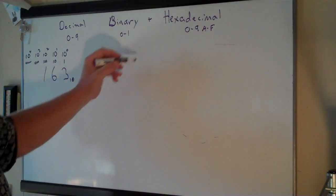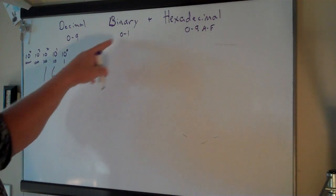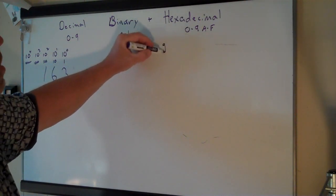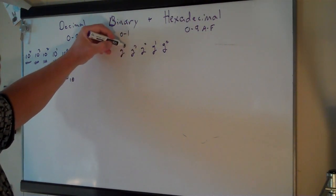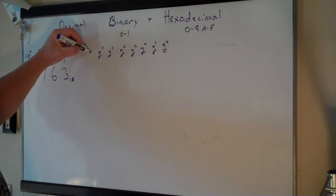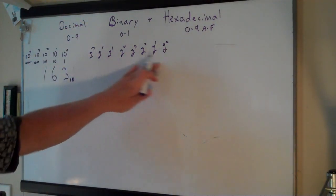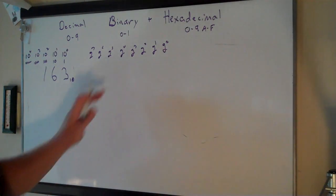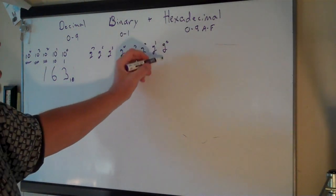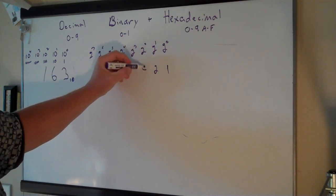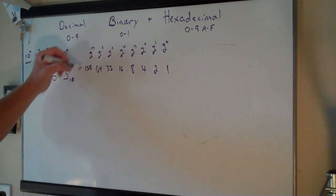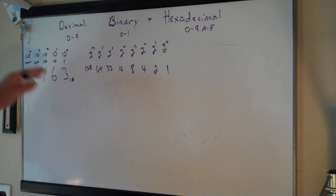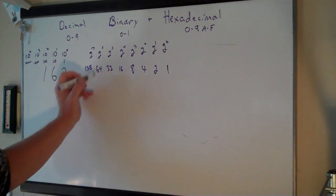In binary you get the same thing, except it's a base 2 system. You only have 2 possible digits instead of 10. You start with 2 to the 0th, 2 to the 1st, 2 to the 2nd, 2 to the 3rd, up through 2 to the 7th. I'll stop at 7 because we generally work with an 8-bit byte, so this gives you 8 bits. 2 to the 0th is 1, 2 to the 1st is 2, 2 to the 2nd is 4, 2 to the 3rd is 8, and so on — you just keep doubling. Whereas in decimal you multiply by 10, in binary you multiply by 2, so each bit is worth twice as much as the last one.